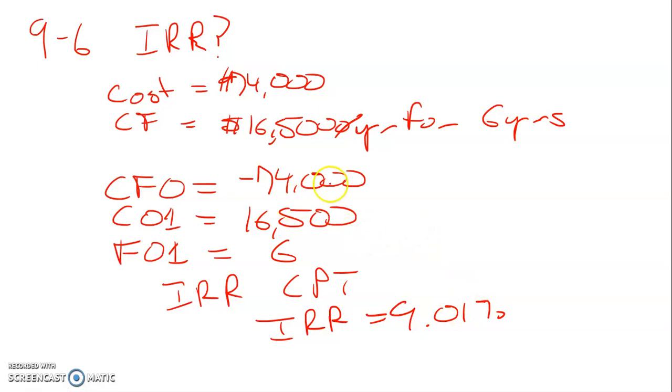One thing that can save you time and make these problems easier: I find it very helpful, especially if you're dealing with millions of dollars, to enter negative 74 and 16.5 instead, and you would still get the same answer.